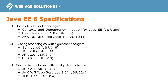We can split up Java EE 6 technologies into three general groups. There are completely new technologies like Context and Dependency Injection, Bean Validation, and JAX-RS RESTful Web Services. Some existing technologies have significant changes like JavaServer Faces, Servlets, Java Persistence Architecture, and EJB. And some technologies haven't changed, like JSP, JMS, and JAX-WS.